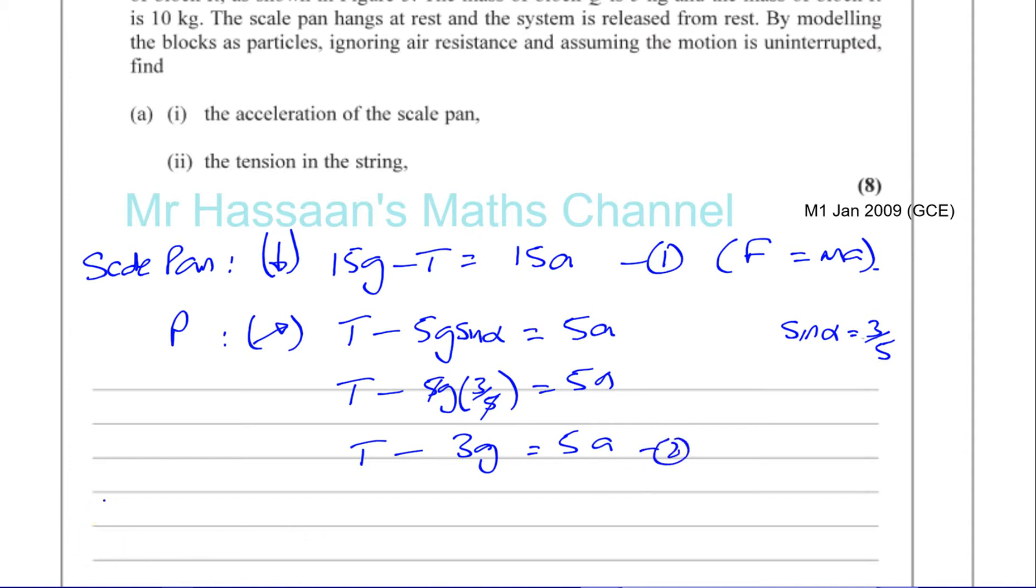If I do equation 1 plus equation 2, the T's will be eliminated. Minus T plus T is 0. So I have 15g minus 3g, which is 12g. I'm adding them together, so it's 15 plus minus 3, and 15a plus 5a is 20a.